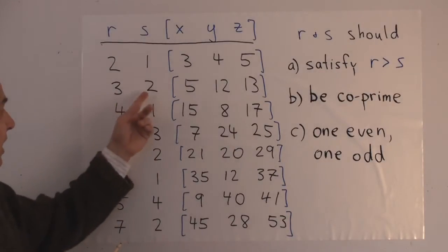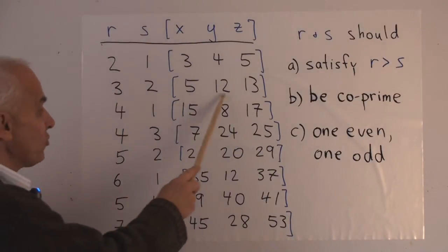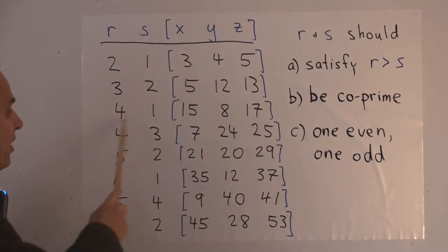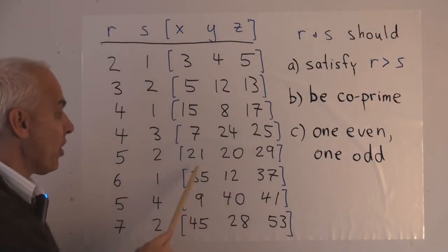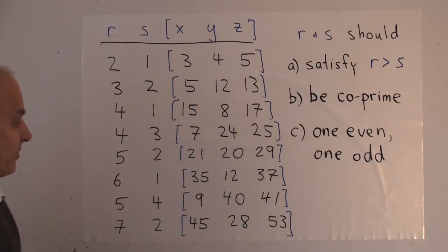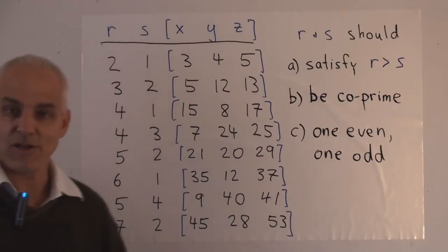Similarly, when r is 3 and s is 2, then we get 5, 12, 13. With other parameters we get some other well-known Pythagorean triples. So have a look at those, and you can generate more easily by substituting different values for r and s.